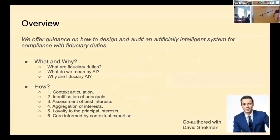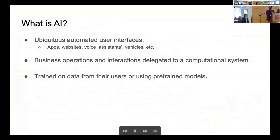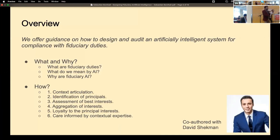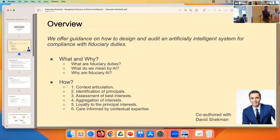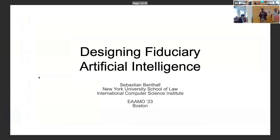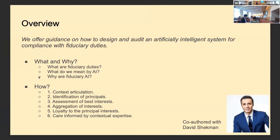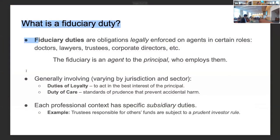Our plan for this paper is to offer guidance about how to design and audit artificially intelligent systems for compliance with fiduciary duties. I'm going to talk about what fiduciary duty is, what we mean by AI, and why you might want fiduciary AI, before talking about our plan to guide design and audit — which involves six steps: articulation of the context, identification of the principals, assessment of best interests, application of those interests, ensuring loyalty, and having care informed by potential agencies.